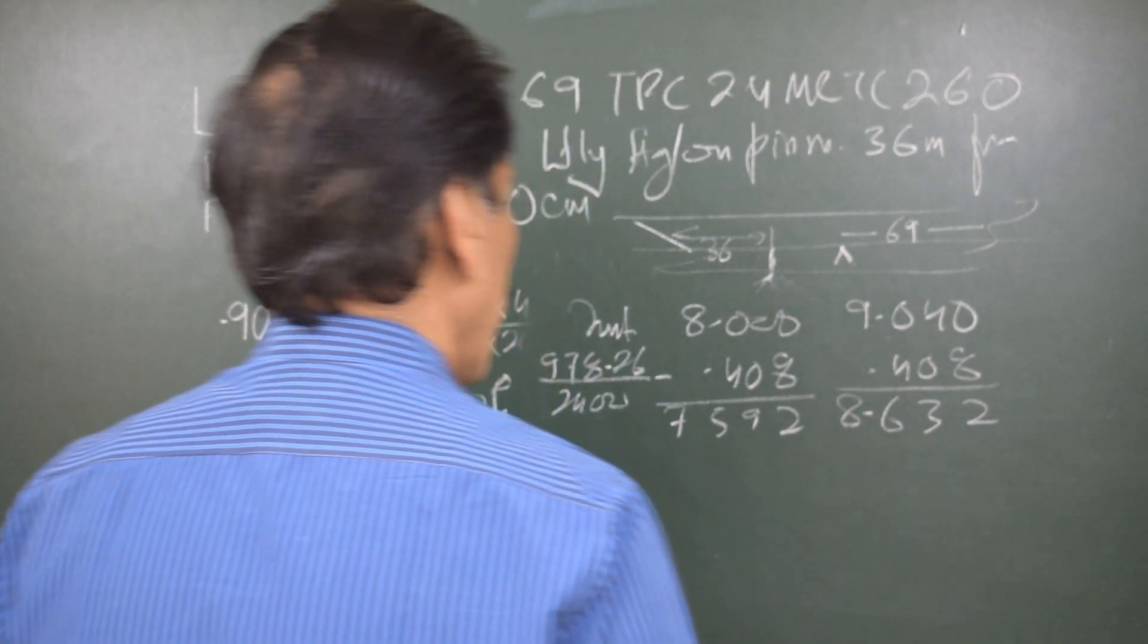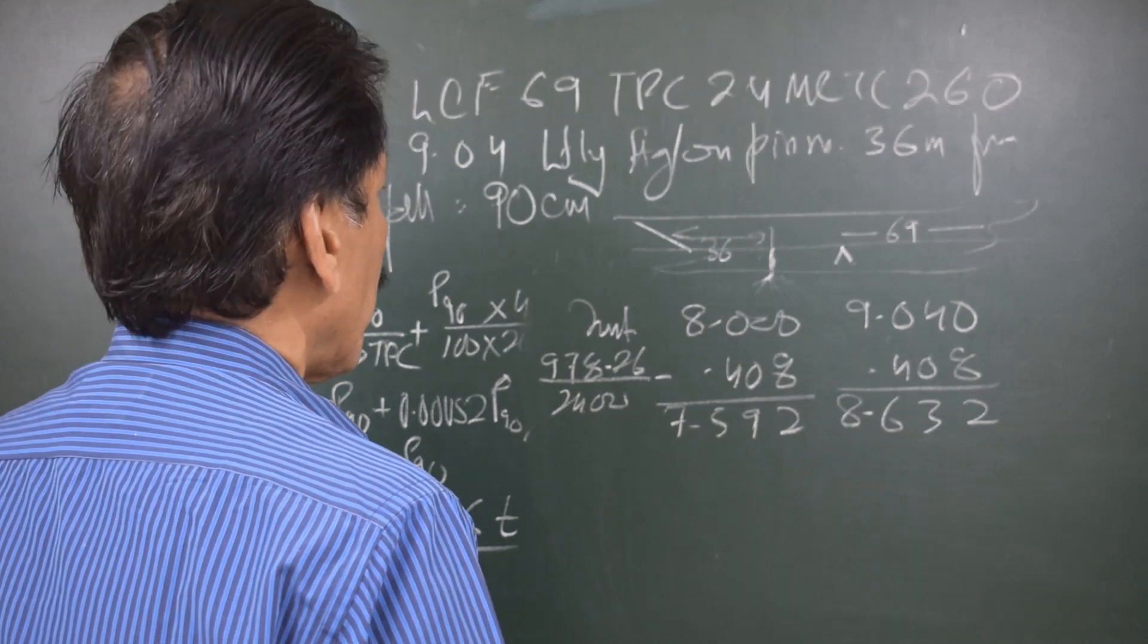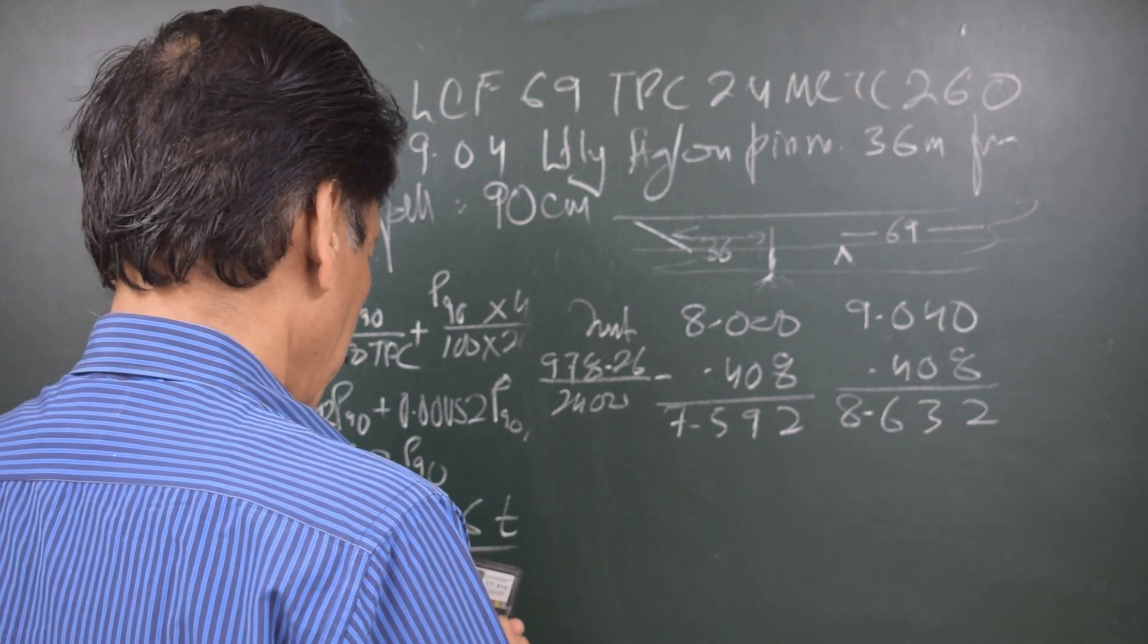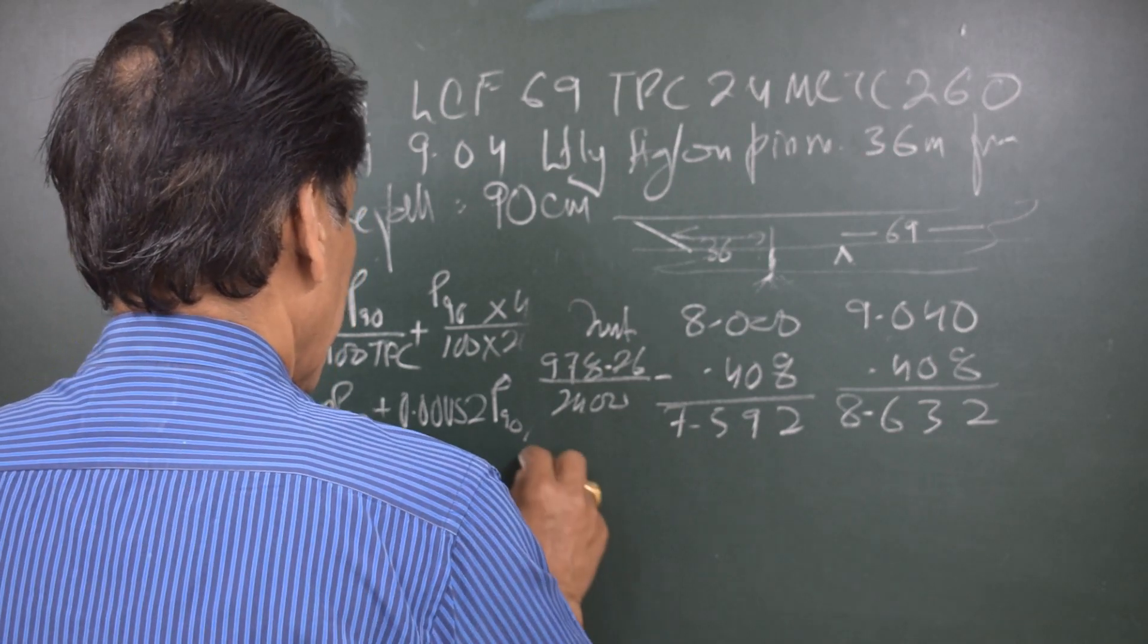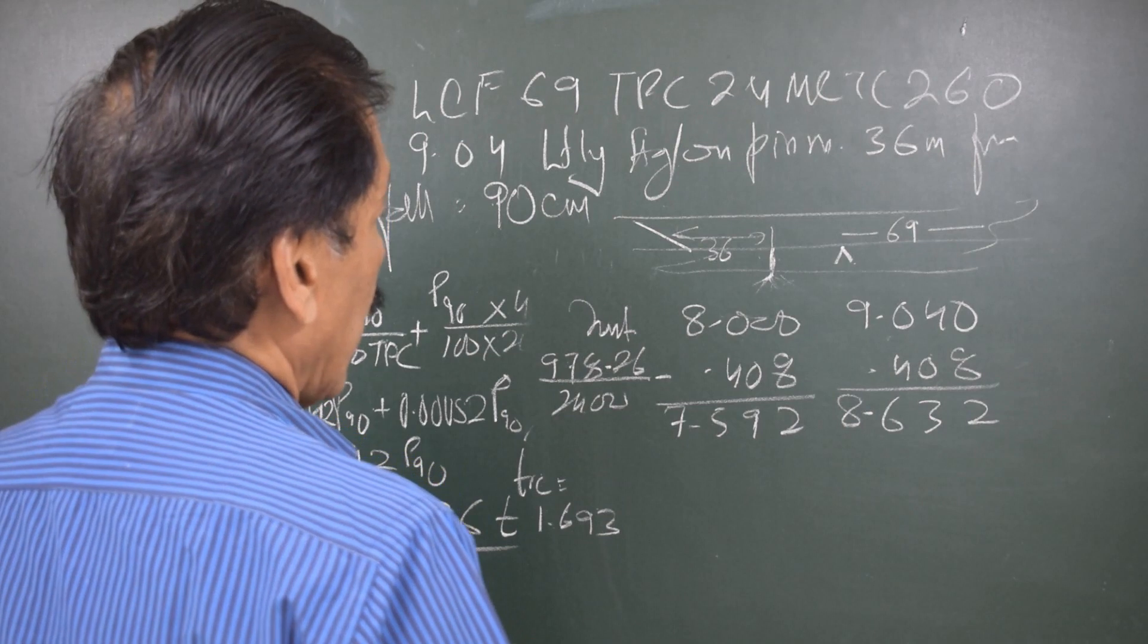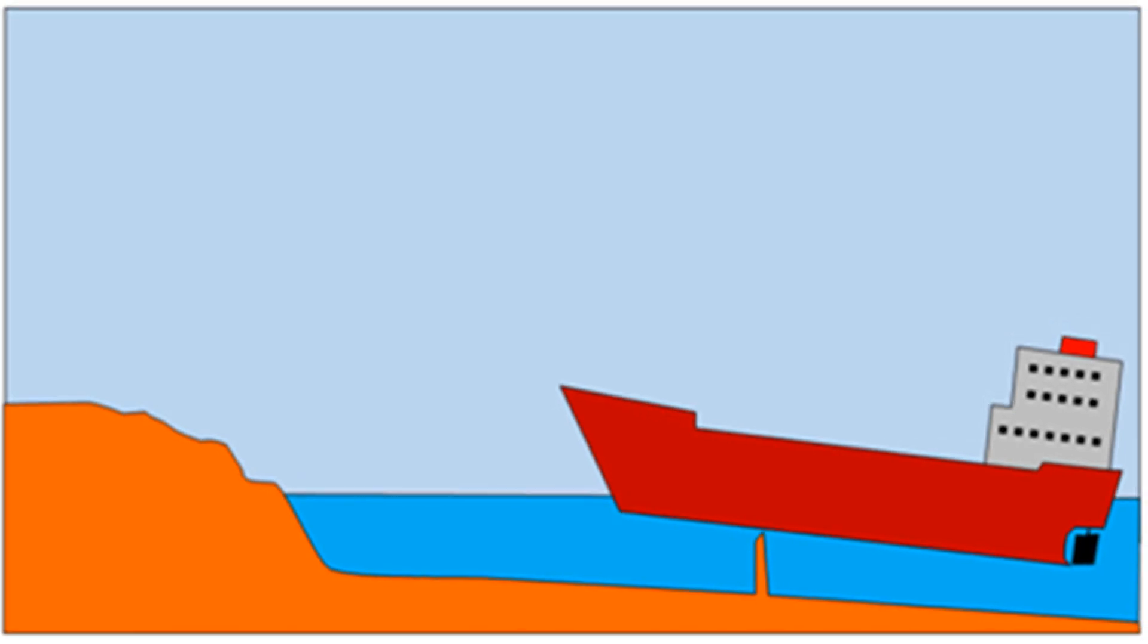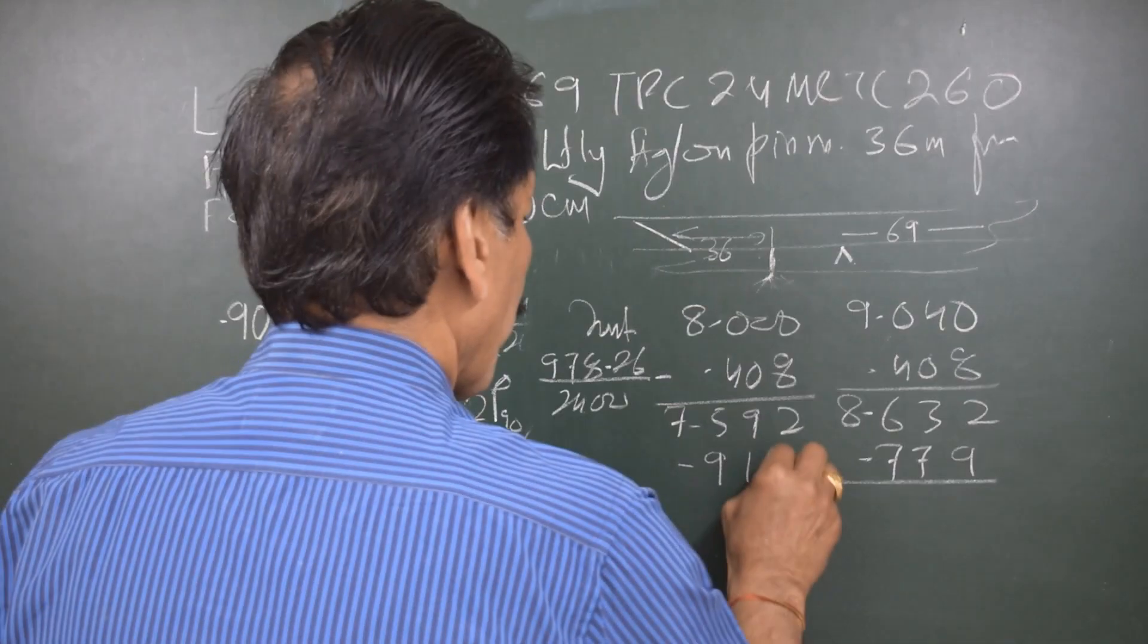So the drafts become 8.408 forward and 9.448 aft. Now there is a trim change. The trim change is equal to 978.26 times 45 divided by 260. The trim change is 1.693. And therefore, what is the change of draft because of this trim change? That is 1.693 into LCF divided by LBP. TRF is going to be 0.779 and TRA is 0.914.